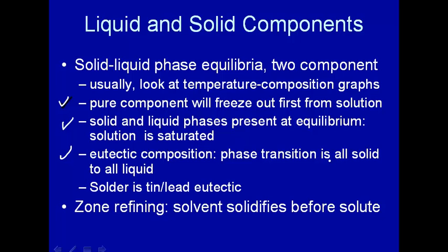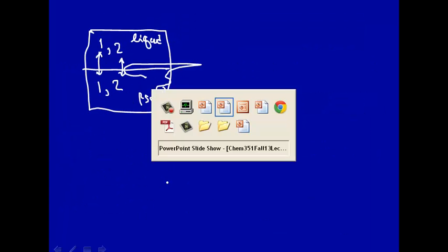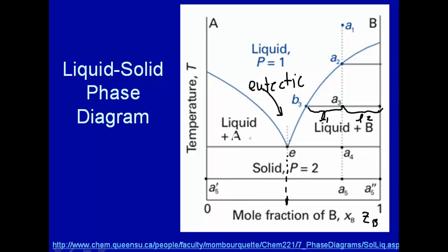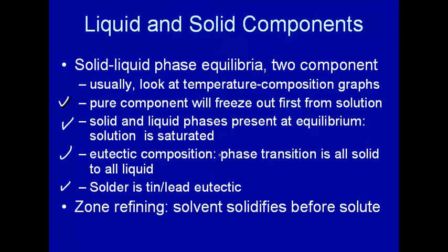And we've learned about the eutectic composition. The phase transition is all solid to all liquid. And an example of eutectic is solder. It used to be tin-lead eutectic, but people don't like lead anymore, so it's usually a different composition. But in the old days, tin-lead, at a particular composition, you would just heat it up and it would melt. And for this particular phase diagram, that eutectic mixture here melts at a lower temperature than either pure A or pure B. So solder then melts at a lower temperature than tin or lead by itself.